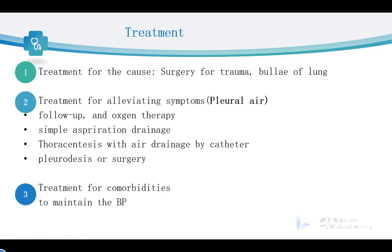The treatment for pneumothorax also includes three approaches. First, treatment for the cause, such as surgery for trauma and lung bleeding. Second, treatment for the symptoms — treatment for the pleural air — including monitoring with oxygen therapy, simple aspiration drainage, thoracentesis with air drainage by catheter, pleurodesis, or surgery. Third, treatment for comorbidities such as shock, where we need to maintain blood pressure for the patient.